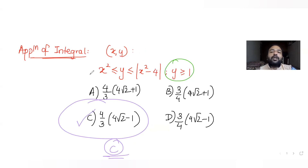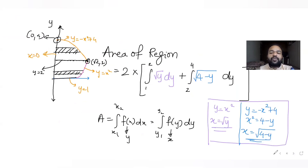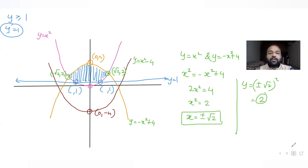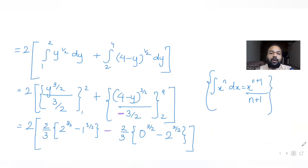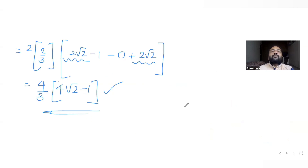I hope you've understood how to solve this type of question dealing with area between enclosed curves. We plotted the curves, found the common region between the parabolas and the line y = 1, used symmetry to halve the problem, took two horizontal strips, and computed the integrals to get the area as (4/3)(4√2 - 1). I'll meet you again tomorrow with more JEE questions — do like, share, and subscribe to the channel.